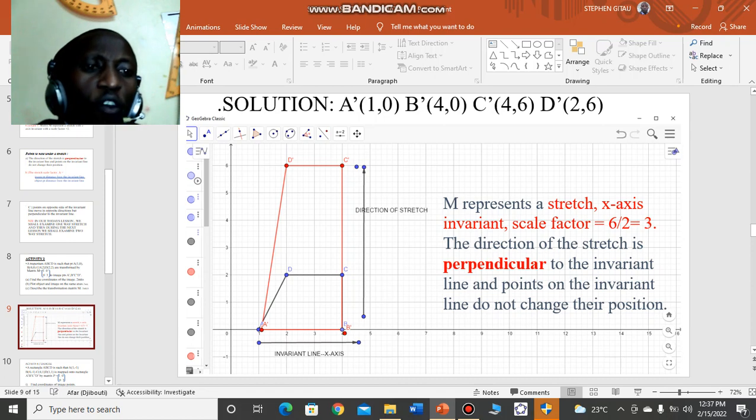Point A is still on the same point as its image. The same case with B. It is on the same point as the object. Image and object points are on the same point. Here we say those points are invariant. They lie on the invariant line.